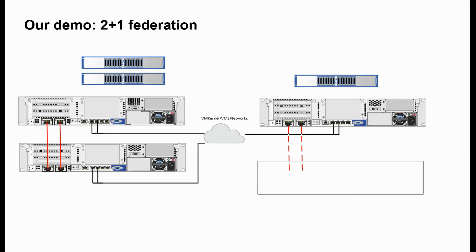At our lab, we already installed two SimpliVity nodes in one cluster, and I want to add a new remote data center with one SimpliVity node. You must understand the new node is connected to the existing SimpliVity nodes only by the management port, and you don't need to connect it by 10 gigabit storage traffic with these two nodes. Maybe in future we'll build our own cluster with 10 gigabit storage traffic at the remote data center. But today, this is a remote branch with only one SimpliVity node.